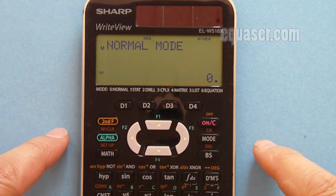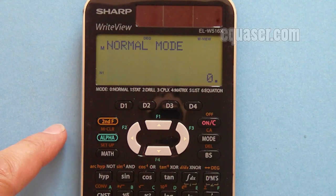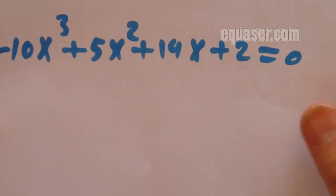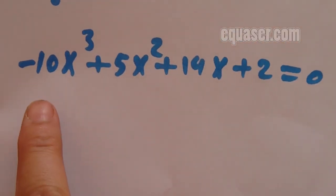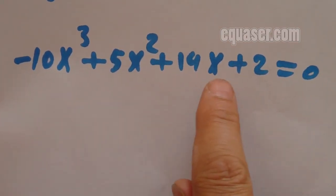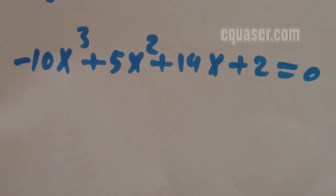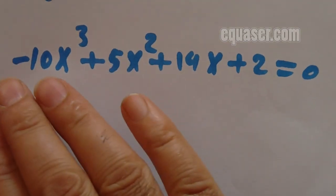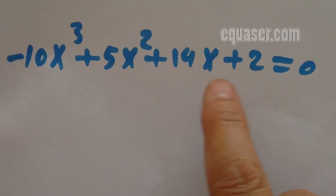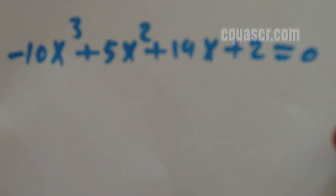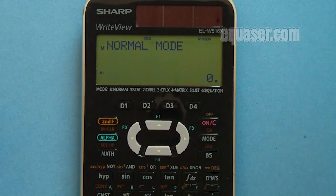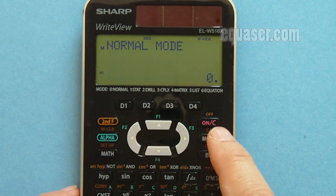To solve for a cubic equation, I have here an equation: minus 10 X cubed plus 5 X squared plus 14 X plus 2 equals 0. We want to find the values for X, so minus 10, 5, 14, and 2 are our values A, B, C, and D.